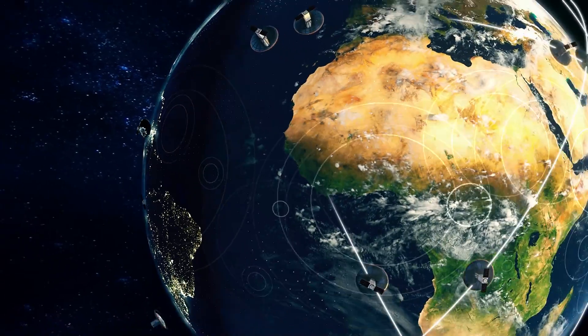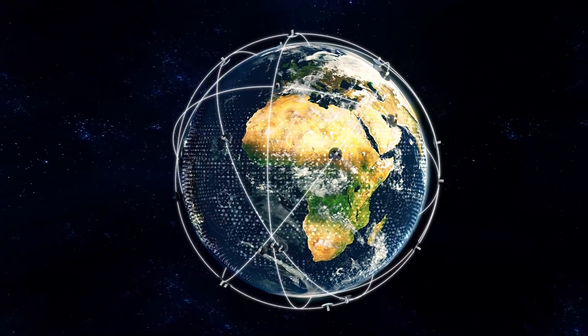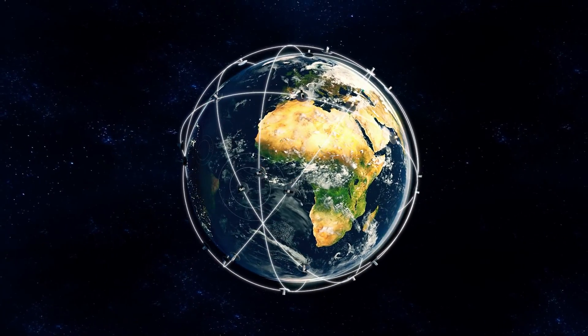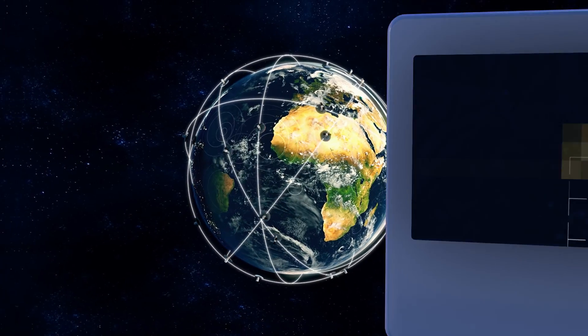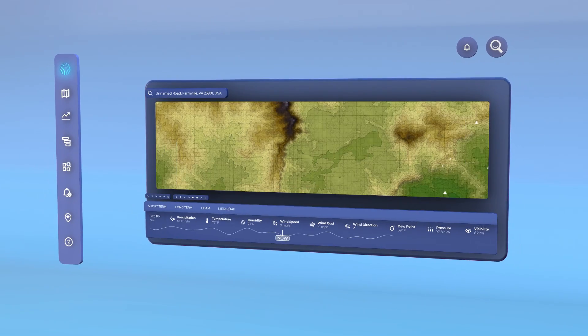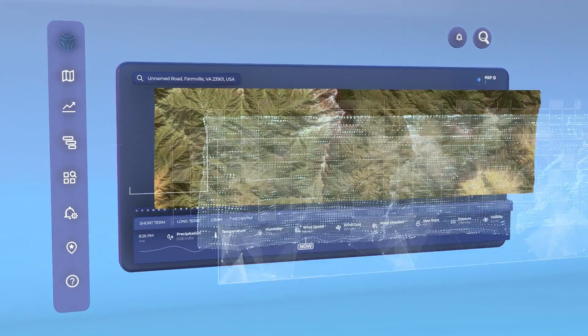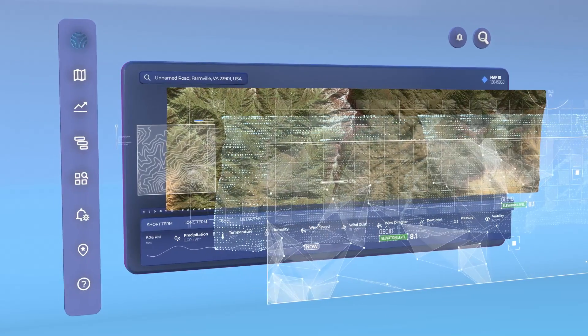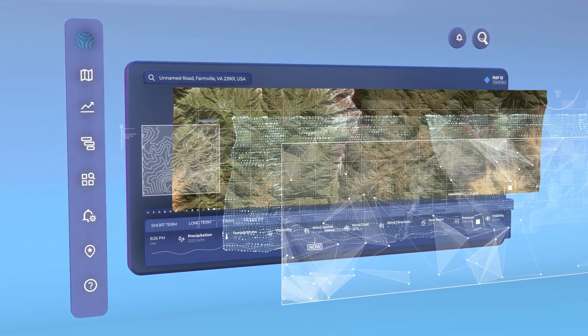Tomorrow.io will launch a constellation of proprietary radar-equipped satellites that will cover nearly every point on Earth. That data from space, combined with other sources, will feed our in-house, high-resolution weather models, which we operate with high-throughput cloud computing.